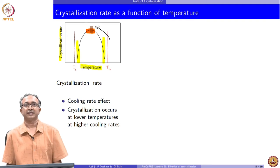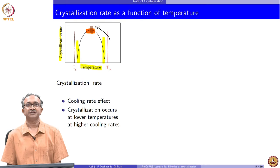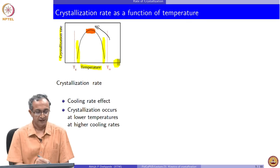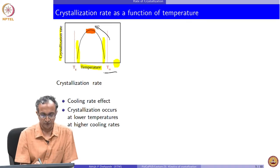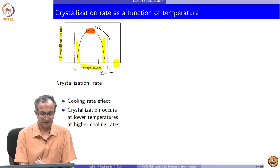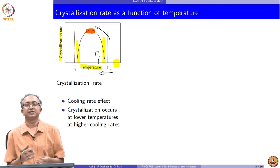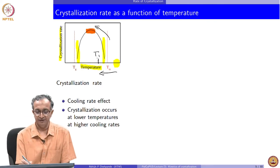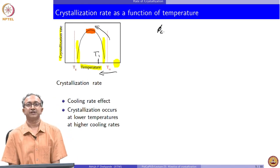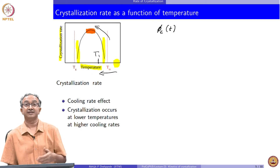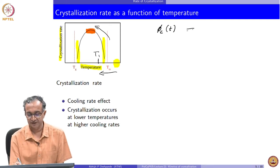One can look at crystallization in two ways. The first is isothermal crystallization — we bring the material to a temperature far higher than the melting temperature and then cool it down to a specific temperature T1. As soon as we bring it to T1, crystallization starts. We define phi_c as the fraction of crystallinity present at any instant of time. When looking at kinetics of crystallization, we are interested in how fast or slow phi_c is increasing.